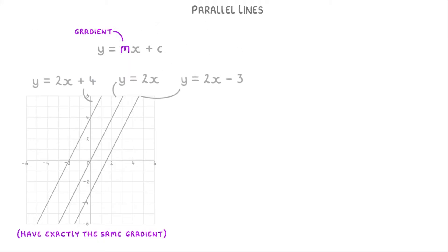For example, if we look at the equations for these three lines that we've drawn, m is 2 for all of them, and this is how we know that they're all parallel, which is why they're all going at the same angle, and they won't ever touch each other.